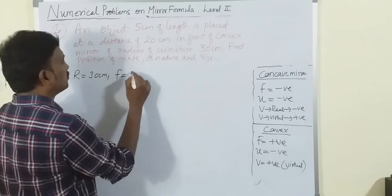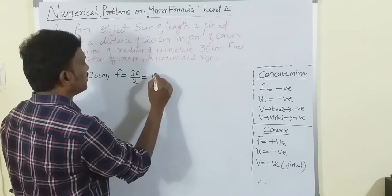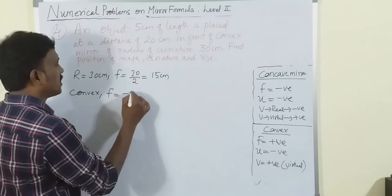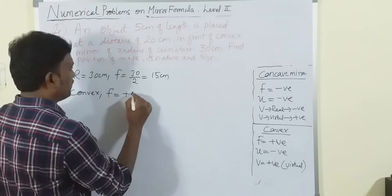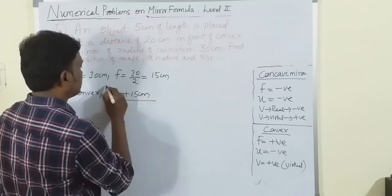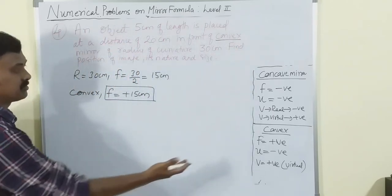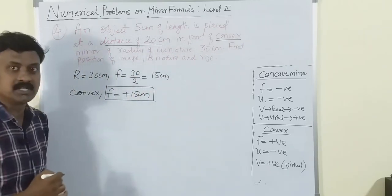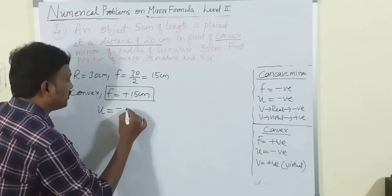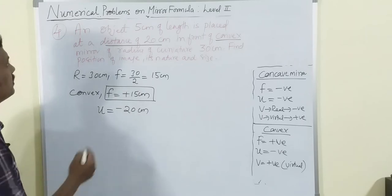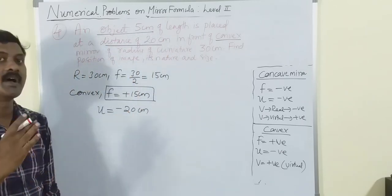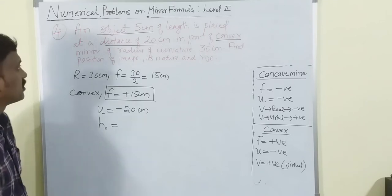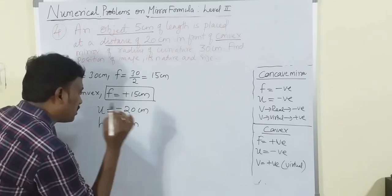Radius = 30 cm, so f = 30/2 = 15 cm. Since it is a convex mirror, f = +15 centimeters. The object is placed at 20 cm in front, so u = -20 centimeters. They have also given the height of the object: h_o = 5 centimeters.